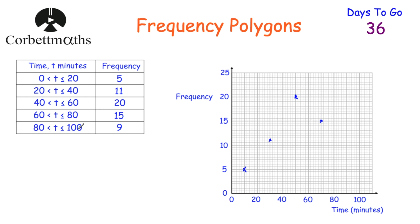Finally, between 80 and 100, that's going to be 90 across and up to 9. There's 10 on the axis, and we're going to go down 2 little lines, because each 2 lines down is going down 1 in frequency. Now we've plotted our 5 points, we just need to get a ruler and pencil and join them up — so it'll look something like this. And that's it, we've drawn our frequency polygon.